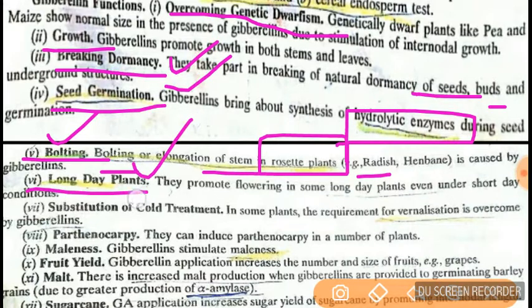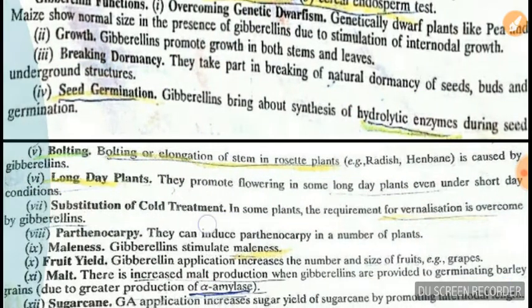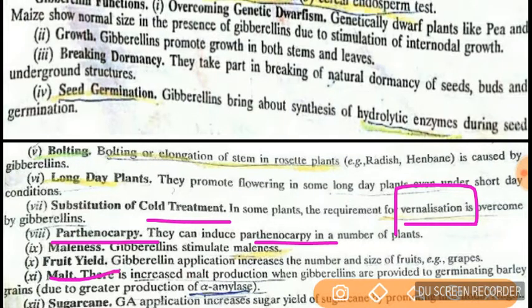Gibberellins promote flowering in long-day plants. They can substitute for cold treatment, meaning they can replace vernalization — the cooling of a seed during germination to accelerate flowering when planted. Gibberellins also induce parthenocarpy, increasing fruit yield and producing seedless fruits. Additionally, they give maleness characteristics to plants.